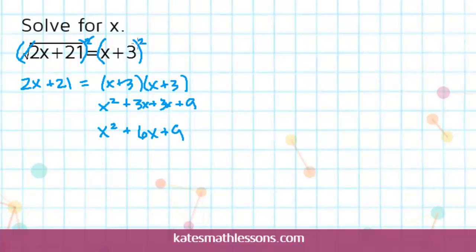So students that make the mistake of just squaring each number, they miss out on this middle term here. On the left hand side I can just bring down the 2x plus 21.